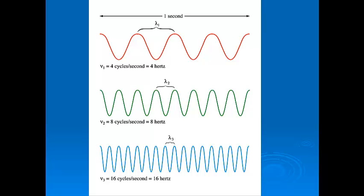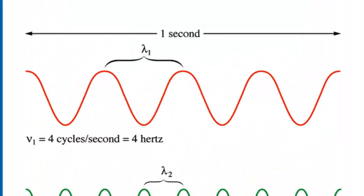When we talk about inverse proportional, what we mean is this. Take a look at these three waves. The top wave, the red wave, has four complete waves traveling past the same point in one second. Or within that double-headed arrow at the top that represents one second of time, we get four waves that fit in there. That's four cycles per second, or four hertz.